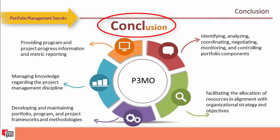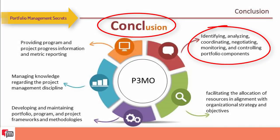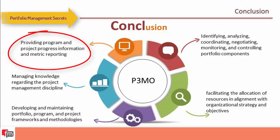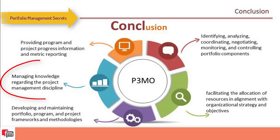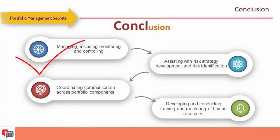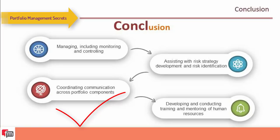Portfolio, program, and project management offices can support organizational maturity by identifying, analyzing, coordinating, negotiating, monitoring, and controlling portfolio components; facilitating resource allocation in alignment with organizational strategy and objectives; developing and maintaining portfolio programs; managing knowledge regarding project management disciplines; monitoring and controlling risks; coordinating communication across portfolio components; and developing and conducting training and mentoring for human resources.